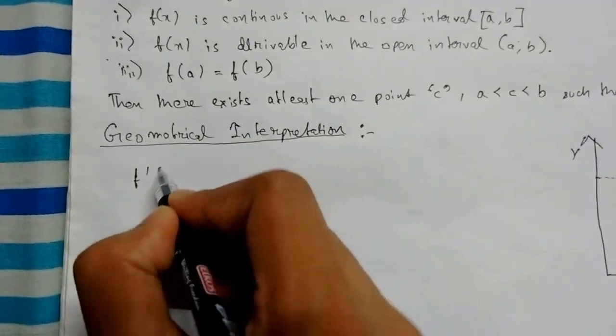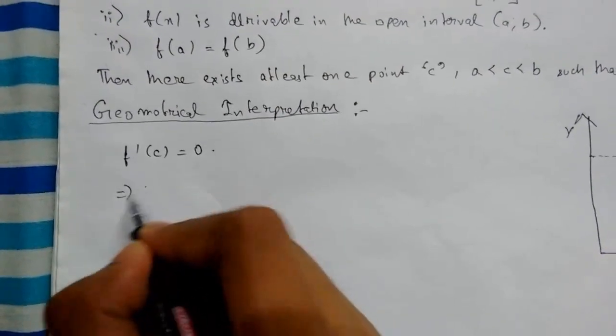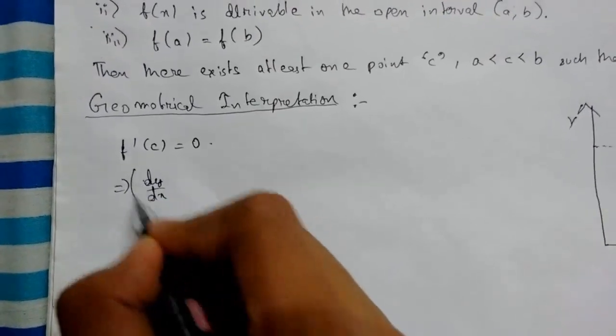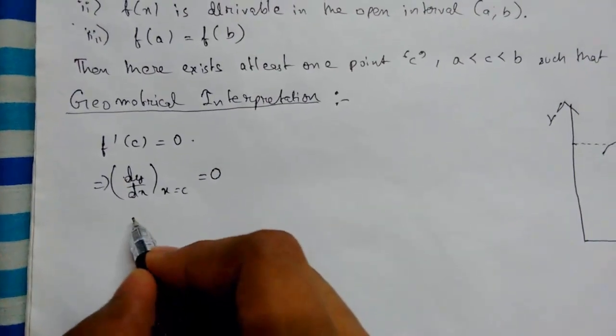f'(c) will be zero. This means dy/dx at x equals c will be zero.